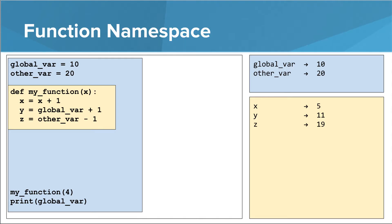An important thing to note is that it doesn't work the other direction — we can't hop down a namespace. If we were to try to print out y in the global namespace, that wouldn't work because Python doesn't know where to find y. It doesn't exist in the global namespace, and Python can't hop down into the function namespace. As soon as the function is done, y goes out of scope and doesn't exist anymore.